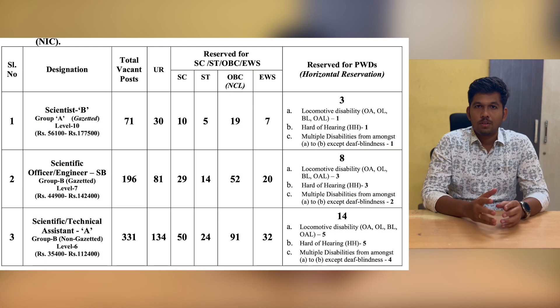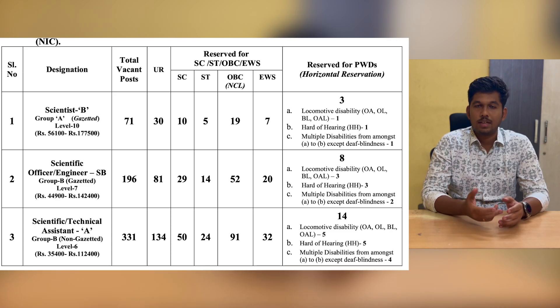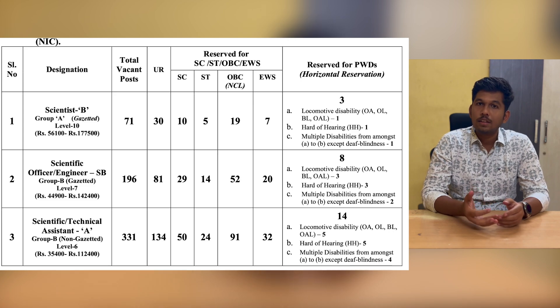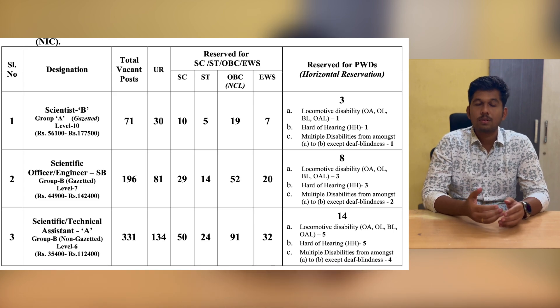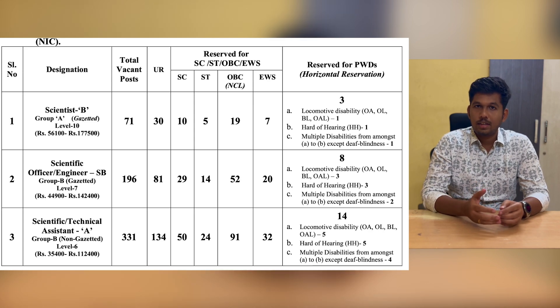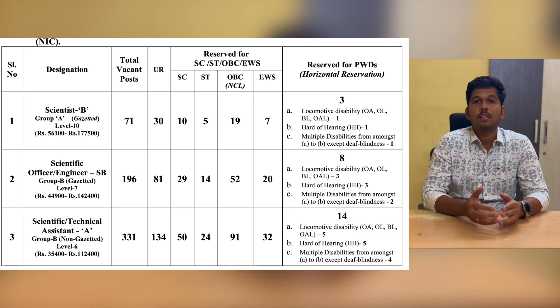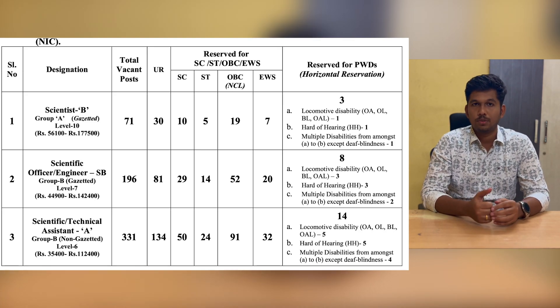On March 4th, 2023, National Informatics Center released a notification for a total vacancy of around 598 for three different posts: Scientist B, Scientific Officer, and Scientific Technical Assistant A. Scientific Technical Assistant A and Scientific Officer are Group B posts, whereas Scientist B is a Group A post. Scientific Technical Assistant A is a Non-Gazetted post, whereas Scientific Officer and Scientist B are Gazetted posts.